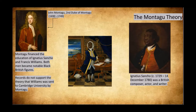You could also write Ignatius Sancho's story, which is very compelling in itself, because he was educated and did have a wealthy benefactor. Because of that, he became a well-known Black British writer, composer, and actor.